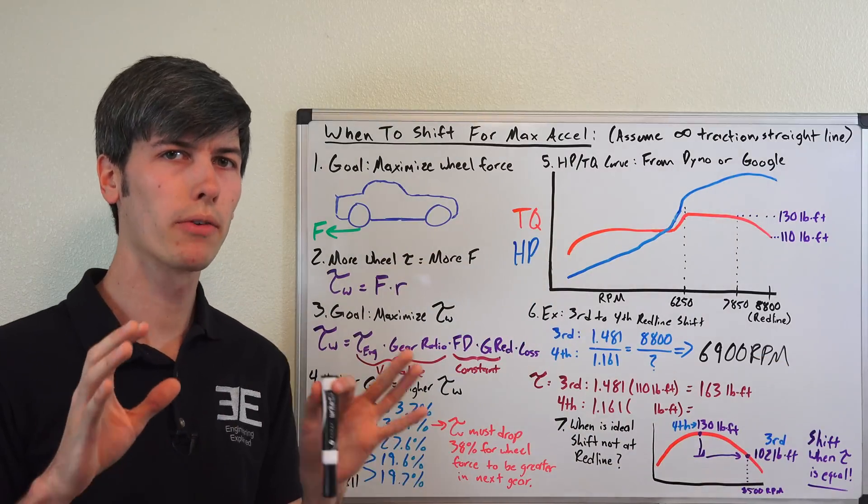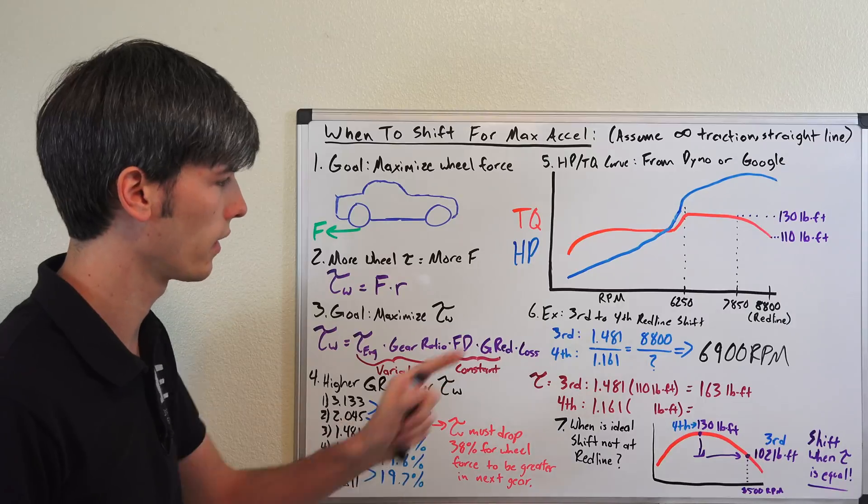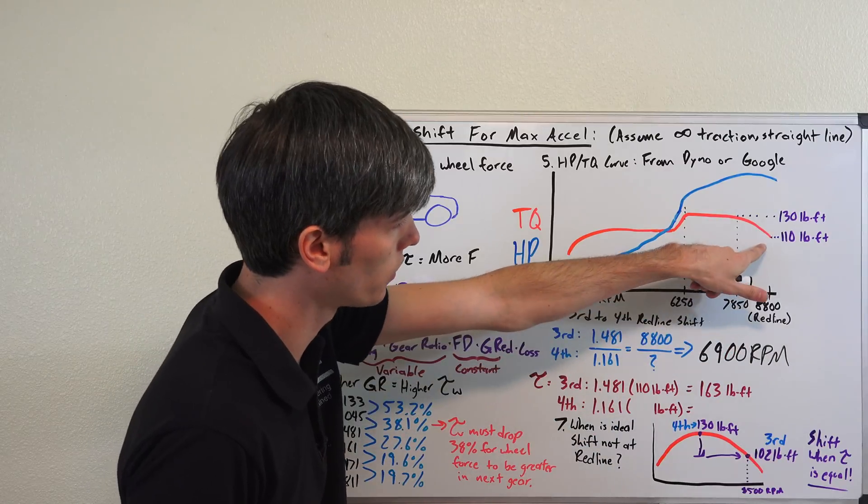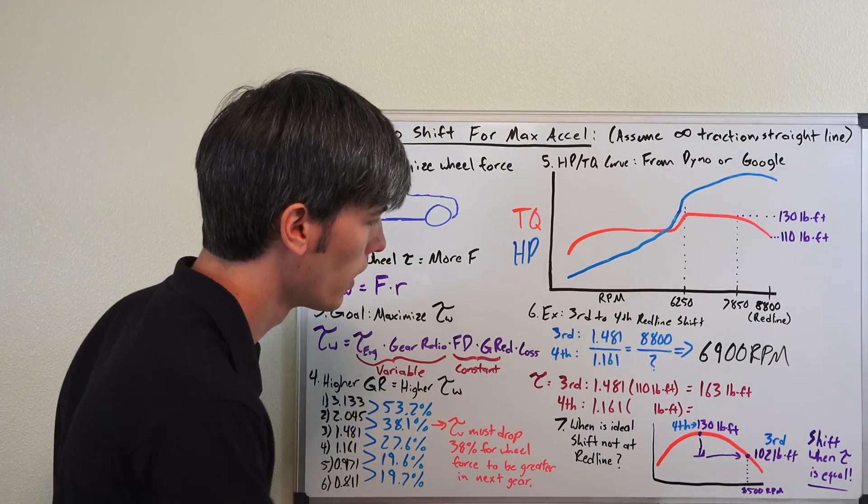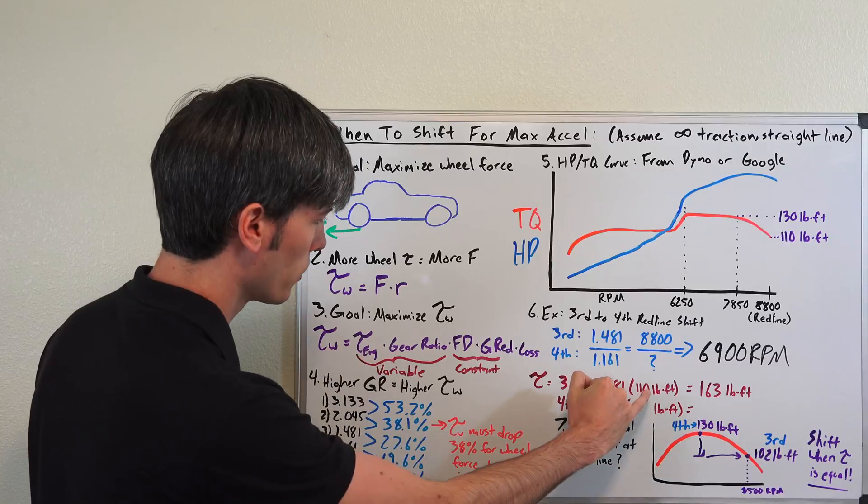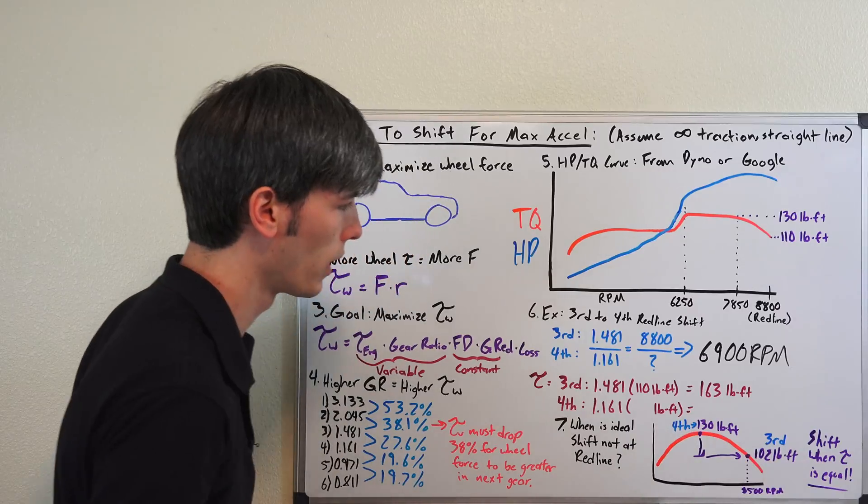So now what we want to find out is, what is the wheel torque in each one of these gears at this exact moment? So in third gear, when we're at 8800 RPM, you can see we're making 110 pound-feet. So 1.481, which is our gear ratio, multiplied by the engine torque, which is 110 pound-feet, gives us 163 pound-feet.